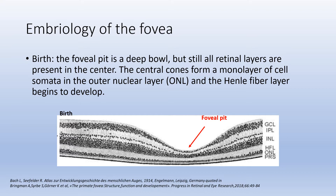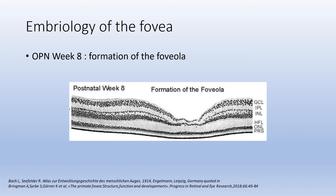At birth, the foveal pit is a deep bowl, but still all retinal layers are present in the center. The central cones form a monolayer of cell somata in the outer nuclear layer and the Henle fiber layer begins to develop. At the 8th postnatal week there is the formation of the foveola. The foveola is formed by cone and Müller cell components and is composed of four layers: the inner layer, the Henle fiber layer, the outer nuclear layer, and the layer of the outer cone cell processes. The inner layer of the foveola, which fills the bottom of the foveal pit, is mainly composed of Müller cell somata and processes. In addition to improving the optical properties of the foveola, the specialized foveolar Müller cells may provide the structural stability of the central fovea.